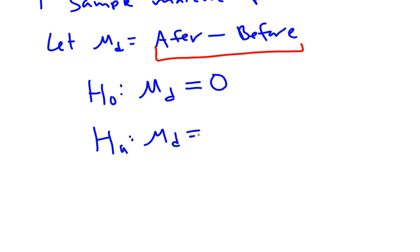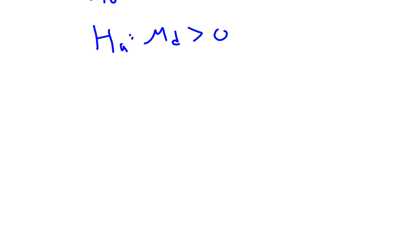Just look back at how you subtracted it. In my case we did after minus before. We know that a higher score means you did better. So we would expect μ_d to be greater than zero. Let's correct that.